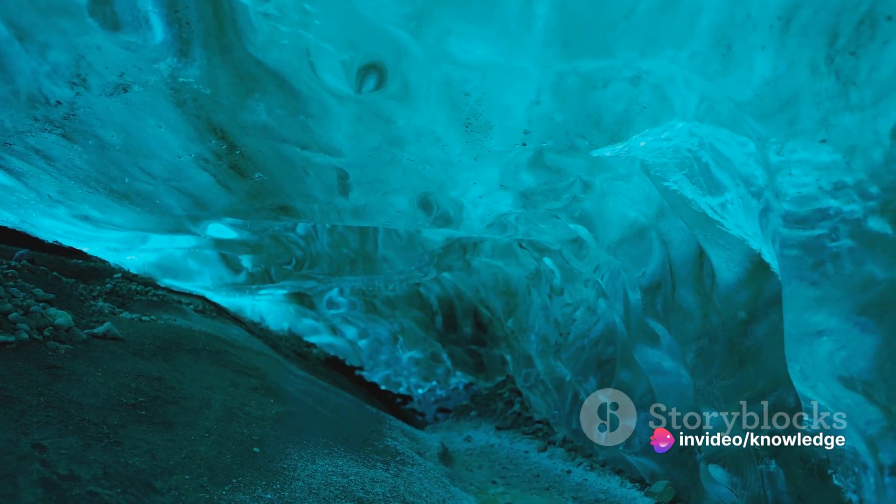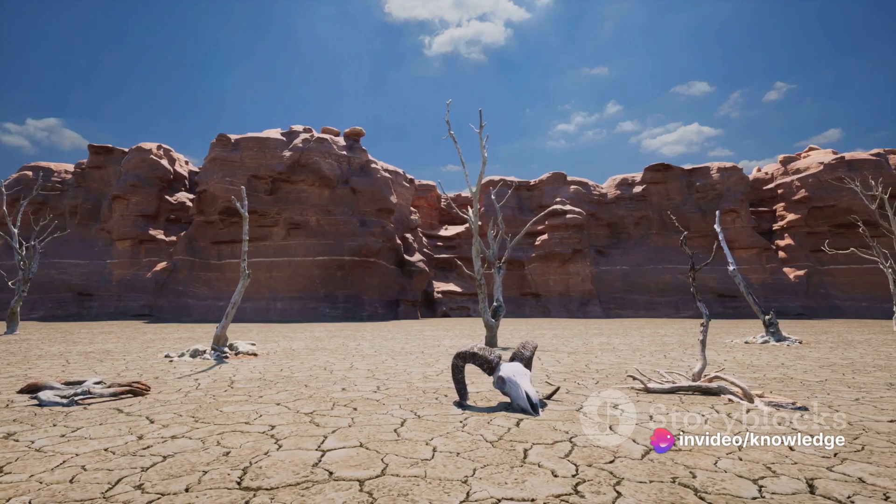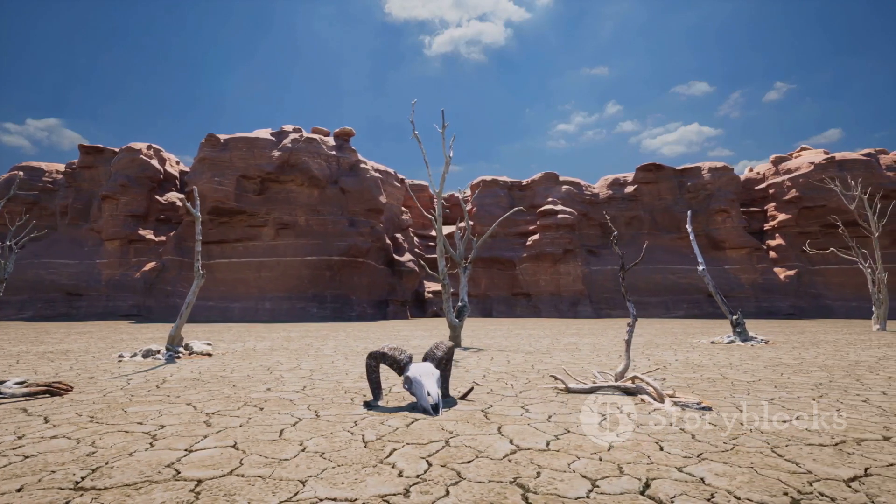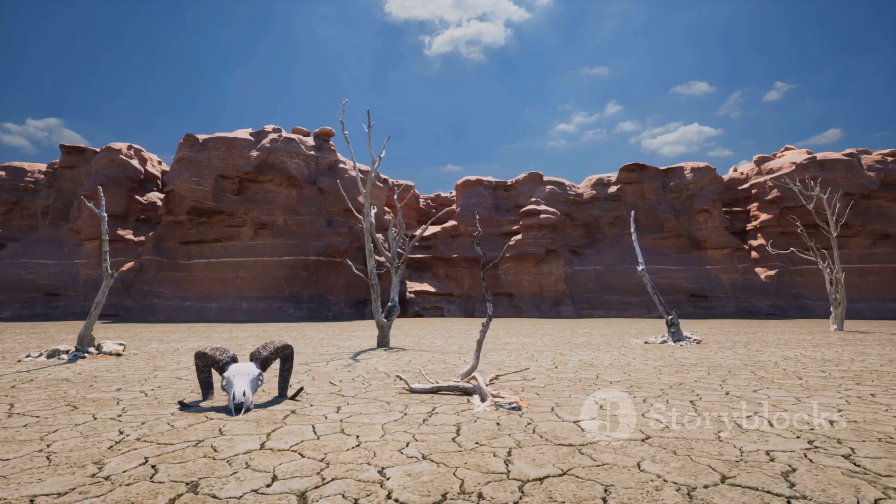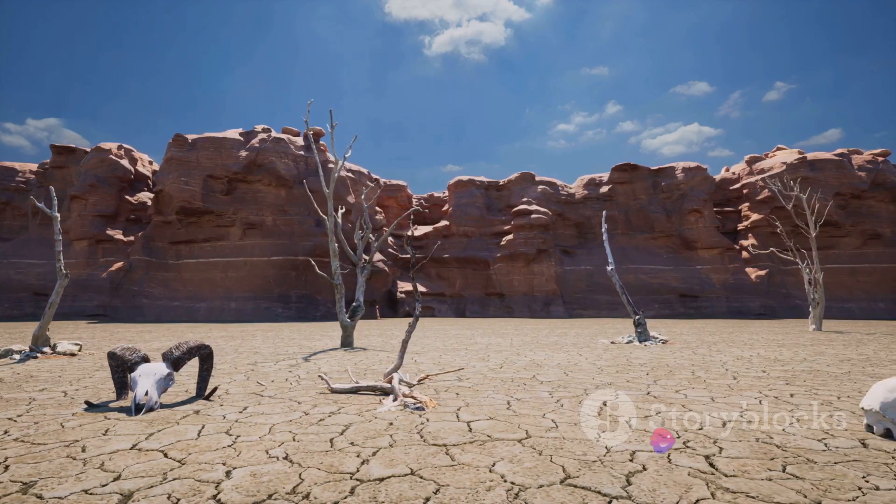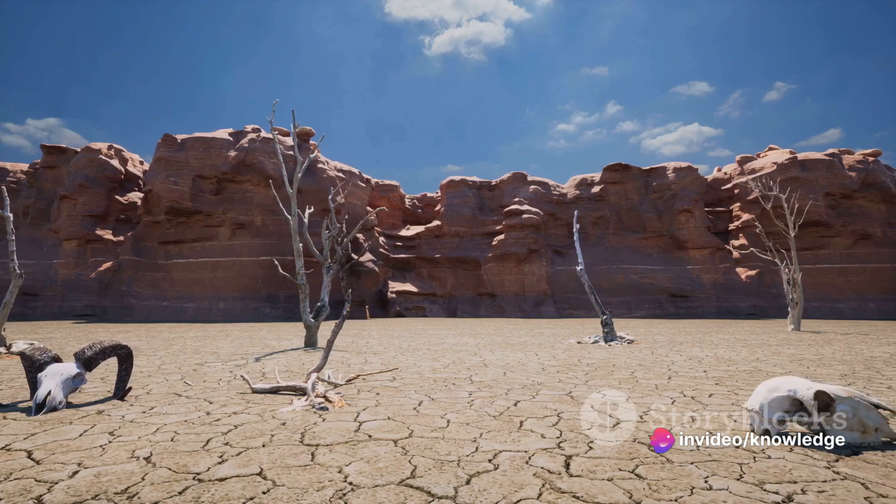Moreover, without sunlight, photosynthesis would cease, leading to a collapse in the food chain. Plants, the primary producers in the food chain, would die off, causing a ripple effect up the food chain, eventually leading to a mass extinction event.